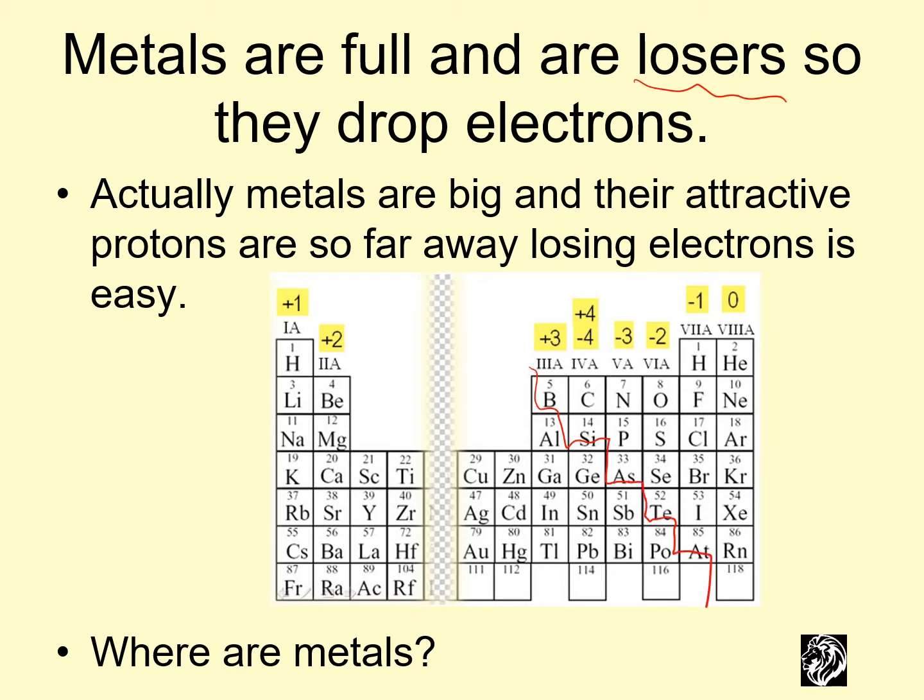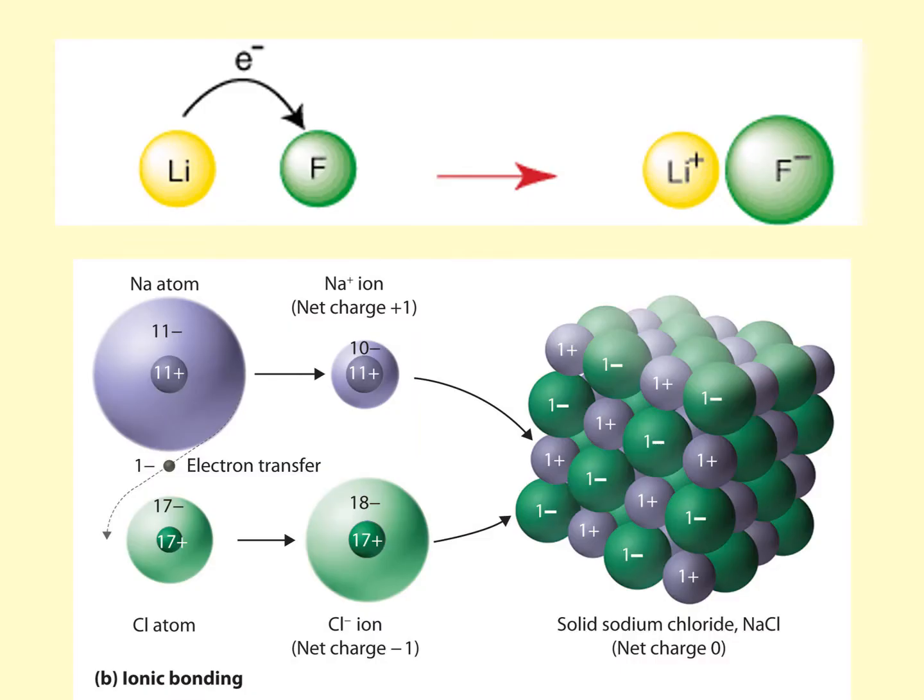So here's that zigzag line again. Let's see if we can find the metals. Here's a plus three, plus four, plus one, plus two, plus one. The metals are on the left side of the periodic table, and you can tell because they turn positive when their electrons go away because they're losers, but it's a positive thing.